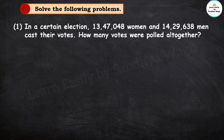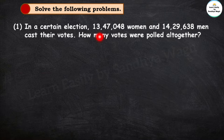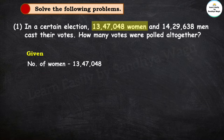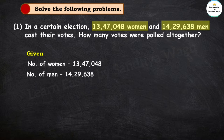First word problem: In a certain election, 13,47,048 women and 14,29,638 men cast their votes. How many votes were polled altogether? In this election these people voted, and the question asks how many total votes were cast. Number of women: 13,47,048. Number of men: 14,29,638.